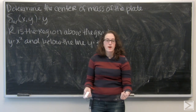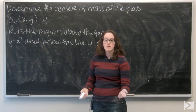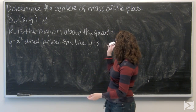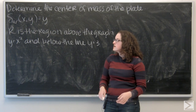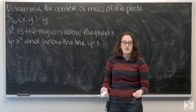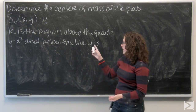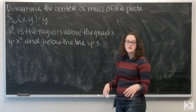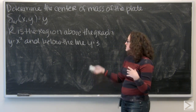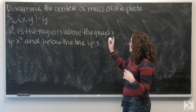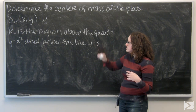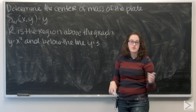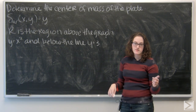For this problem, I'm asked to determine the center of mass of a plate. I'm given its area density y, and the plate is in the region R above the graph y equals x squared and below the line y equals 3.